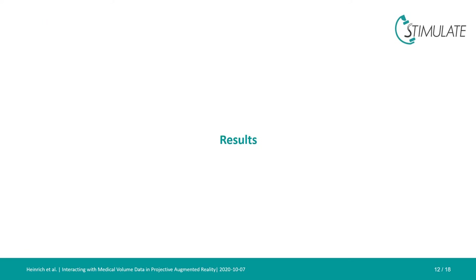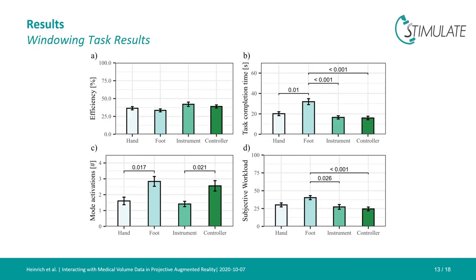Tests on the efficiency variable of the windowing tasks showed no significant differences — users were able to complete these tasks with all techniques in a more or less similar fashion. However, differences showed for the other variables. The controller method took the least amount of time and was perceived to be the least demanding. The hand and instrument concepts ranked similarly. Notably, the controller concept required quite a lot of mode activations, which we suspect was simply due to the fact that these activations were much easier and faster to perform with the controller.